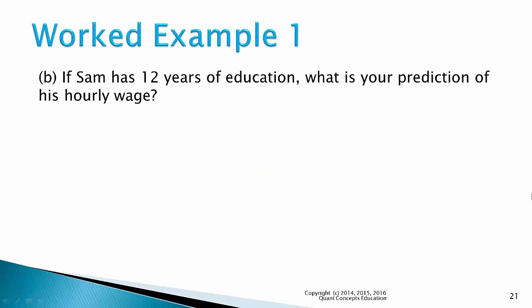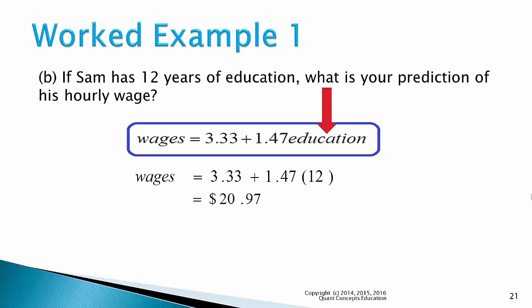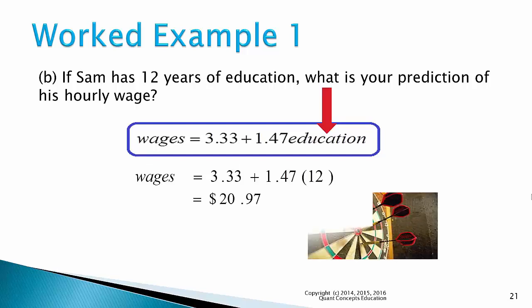Part B: if Sam has 12 years of education, what is your prediction of his hourly wage? First we write down the estimated regression line as we did in Part A. This tells us how to make predictions for wages based on someone's education level. We insert the person's education level and calculate the value for wages. So in Sam's case, we substitute 12 for education, and his estimated wage is 3.33 plus 1.47 times 12, which gives us $20.97. So based on Sam's level of education, we predict his wage to be $20.97 per hour.